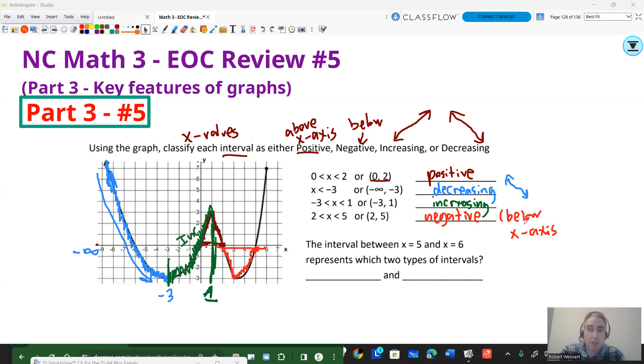But then the last question is just saying, can we come up with an interval that combines two? So if I look at between 5 and 6. So here's 5. So 5 to 6. Looks like that interval is going up. But also notice that it's all above the x-axis. So between 5 and 6, you actually have two types of intervals. That's going to be positive, and it's going to be increasing.